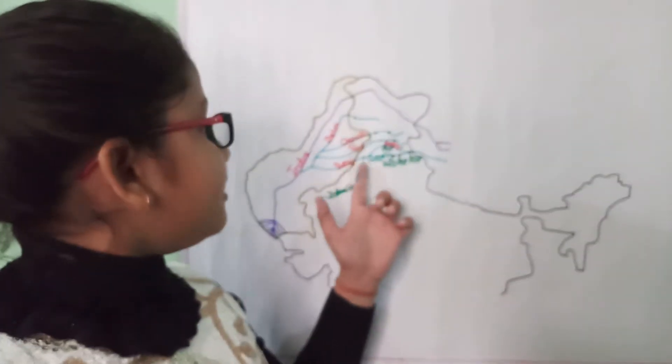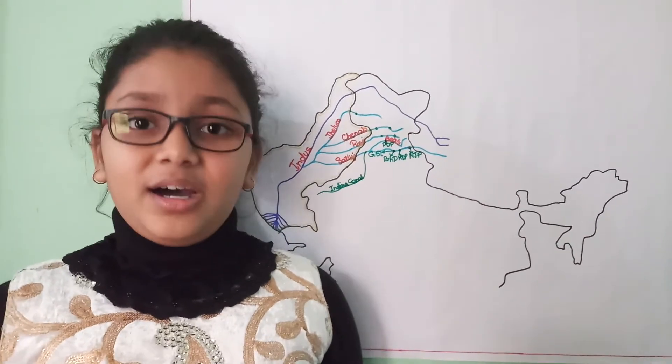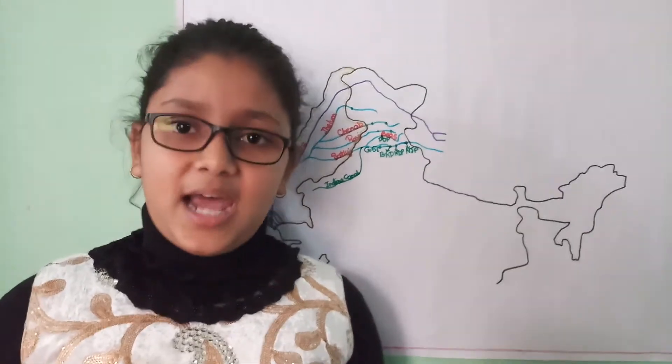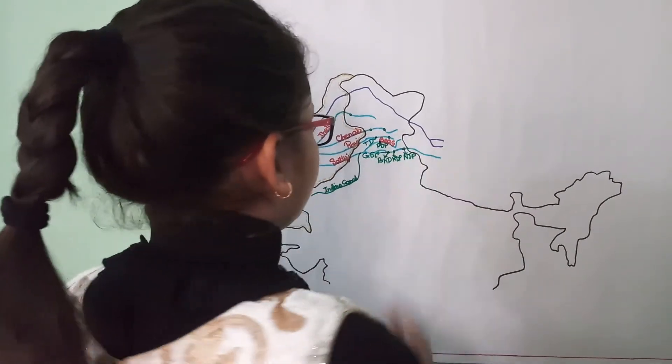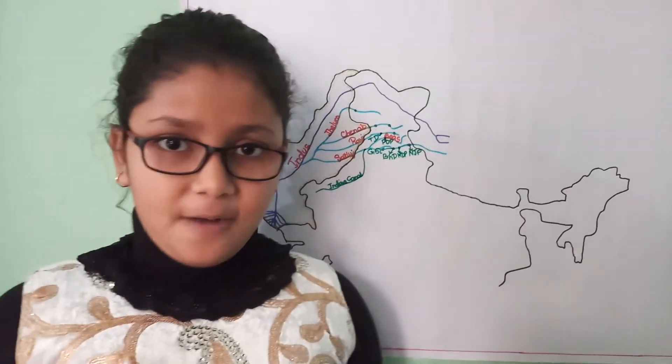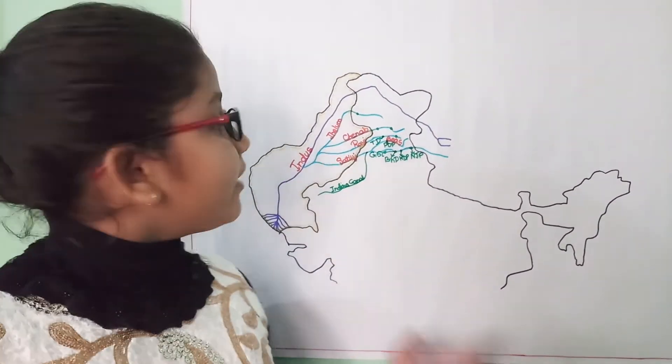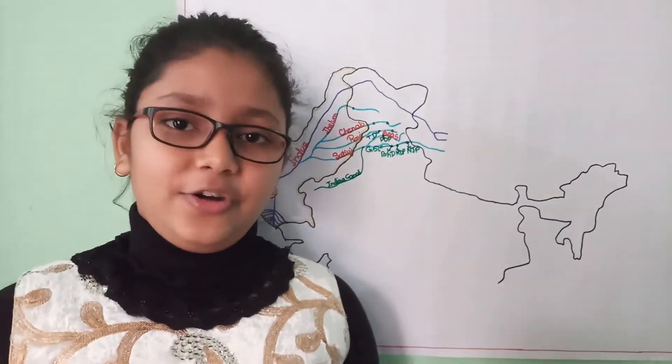So now comes the Ravi River. On the Ravi River, first we have the Thein Dam. It is built in Punjab on the Ravi River, and its total capacity is 600 MW.